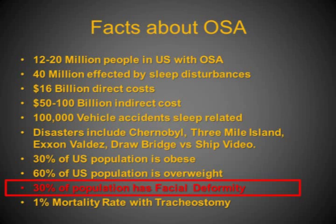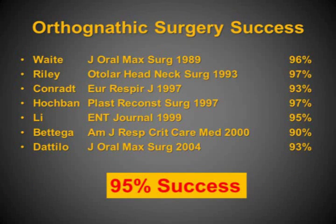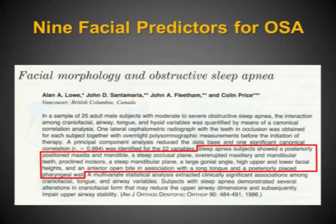Obstructive sleep apnea affects 20 million people in the United States. It is costly in terms of dollars as well as lives. 30% of the population has a facial deformity that can be contributing to their obstruction. The literature shows that orthognathic surgery, or jaw surgery, can be 95% successful in curing obstructive sleep apnea. In fact, there are nine facial predictors to determine if the skeletal structures are part of the obstruction.